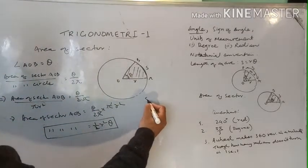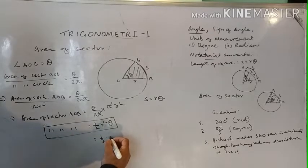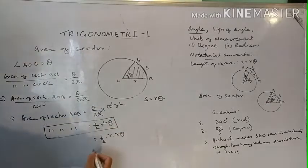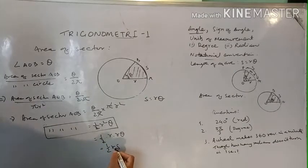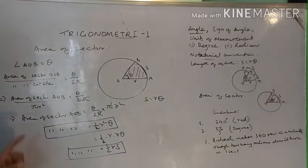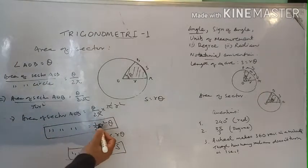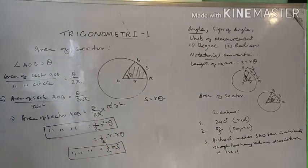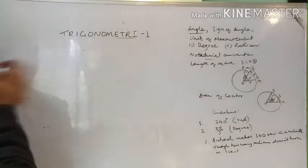Since S = Rθ from the previous formula, we can also write the area of sector as ½ × R × Rθ = ½RS. So there are two formulas: area of sector equals ½R²θ — use this if you know R and θ; or area of sector equals ½RS — use this if you know R and arc length S.